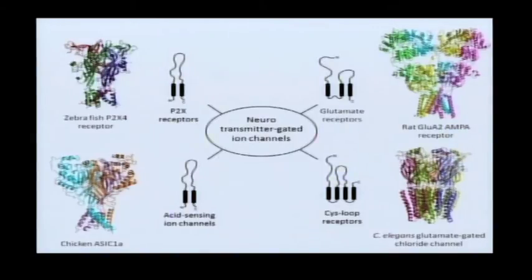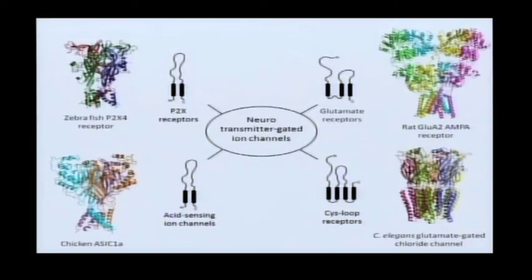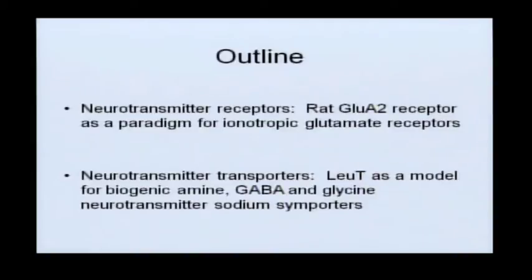Today, in the interest of communicating some principles of structure and mechanism of a system that I believe we understand reasonably well, I want to focus on glutamate-gated receptors in the ionotropic glutamate receptor family and, in particular, to concentrate on the AMPA receptor. My talk today will really have two parts: mostly two-thirds on ionotropic glutamate receptors and then the last third or so on neurotransmitter sodium symporters, for which I'll use a bacterial model as a paradigm.